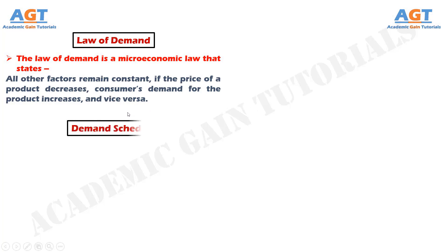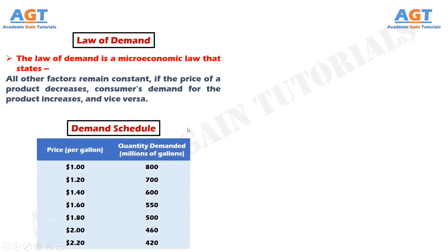A Demand Schedule is a table that shows a range of prices for a certain good or service and the quantity demanded at each price. This is a demand schedule — this table shows the price for each gallon of gasoline and the change of demand with change of price of each gallon.